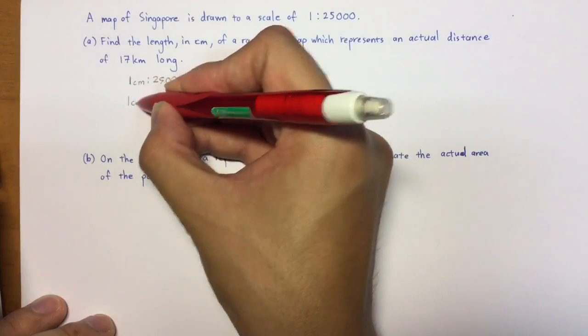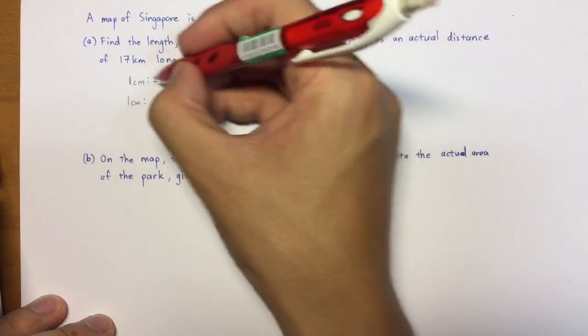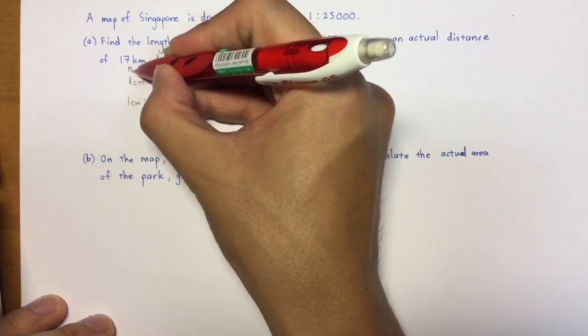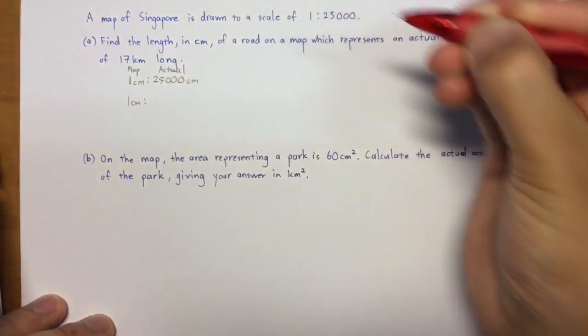So the next thing you need to do actually is to change this value here. Okay, but to recap, this is actually the map value, and this is the actual value.